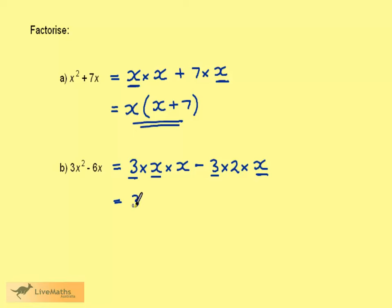So we can write down 3x and open a bracket. What we have left is x, a minus sign, and a 2.